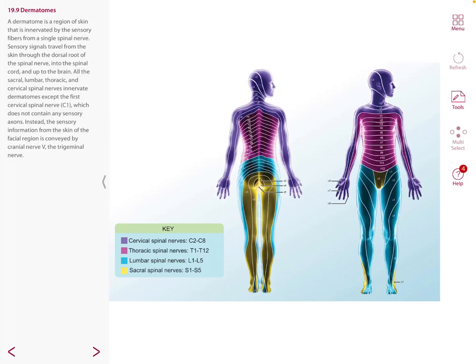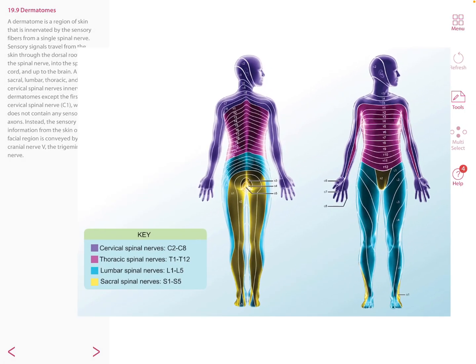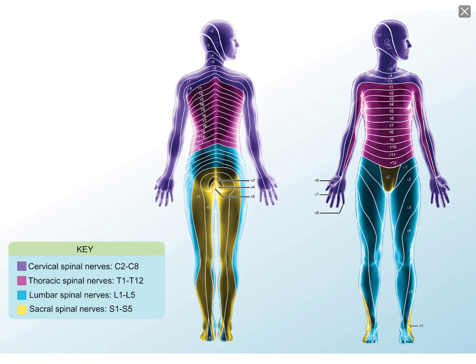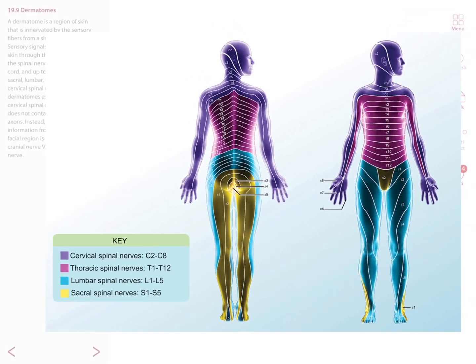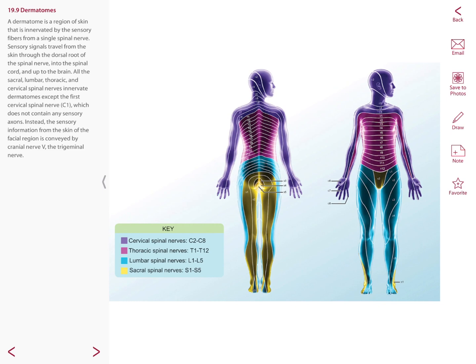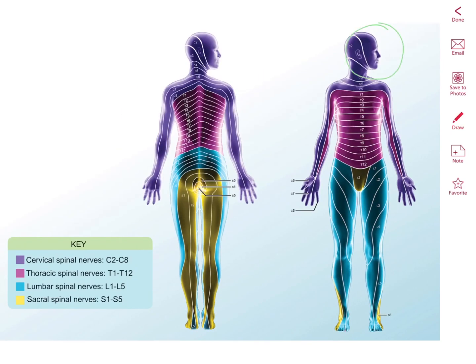Certain segments of the skin are supplied by spinal nerves that carry somatic sensory nerve impulses to the brain. These are known as dermatomes. Almost every single spinal nerve from C2 all the way down to S5 innervates a portion of the body, except for C1. The area of the face is innervated by the cranial nerve called the trigeminal nerve.